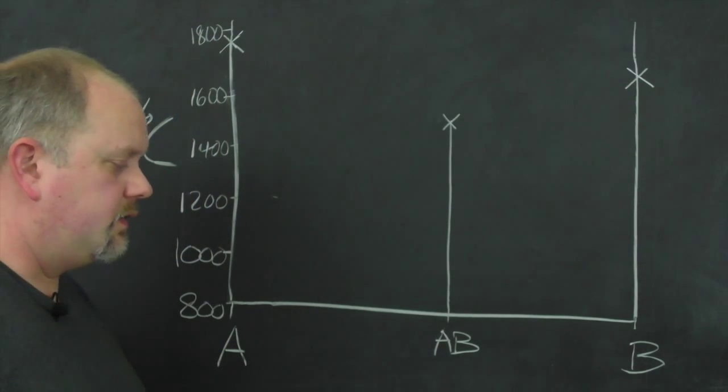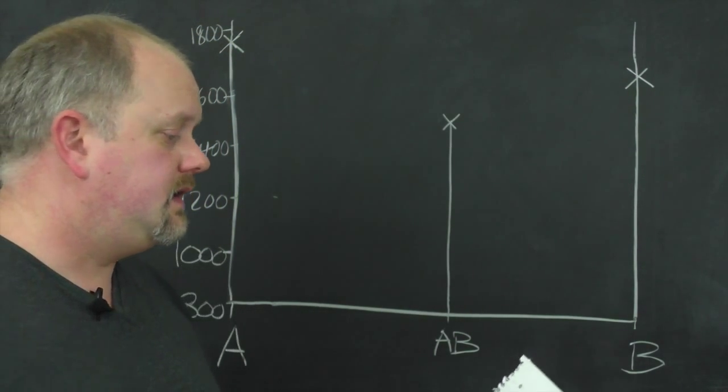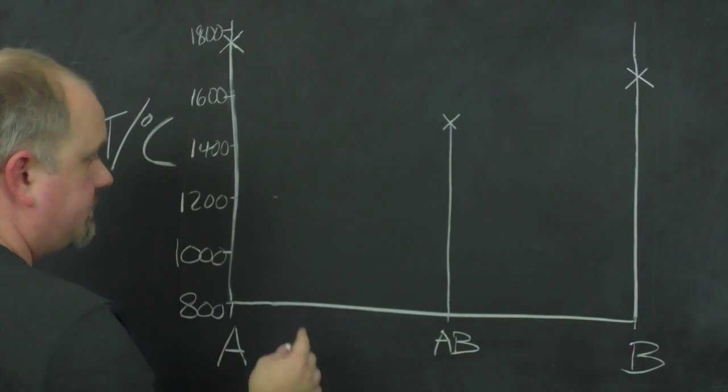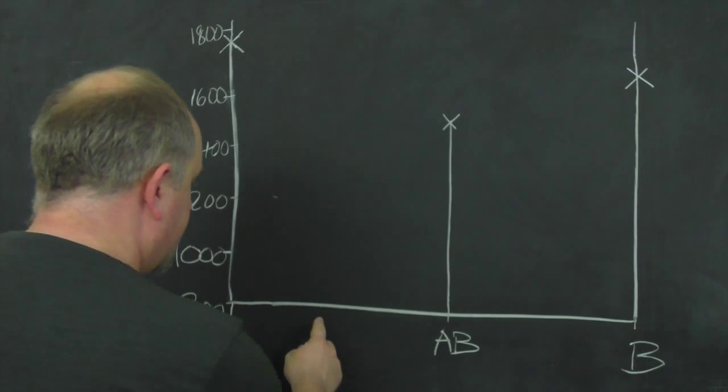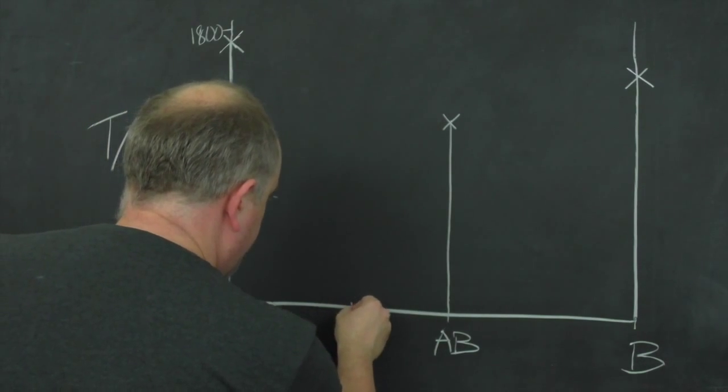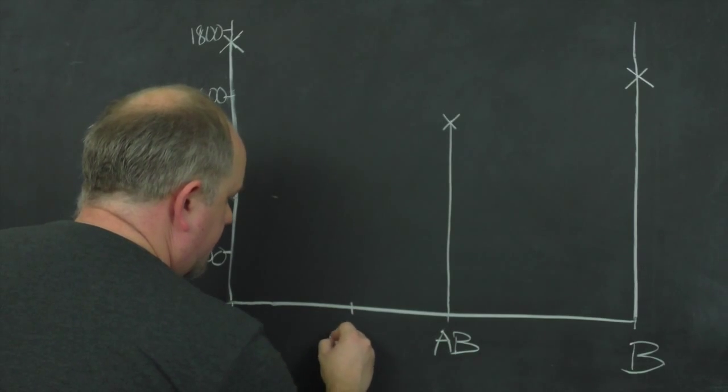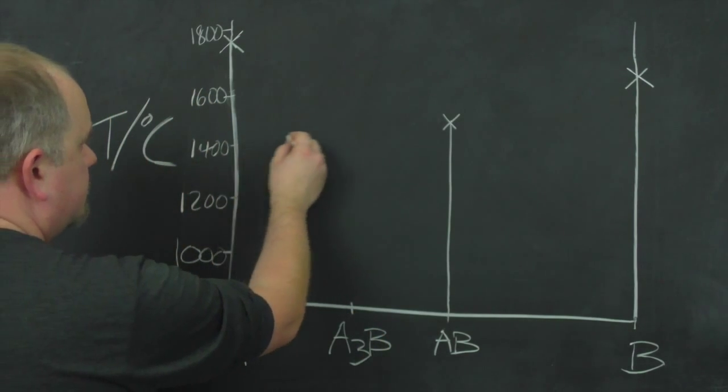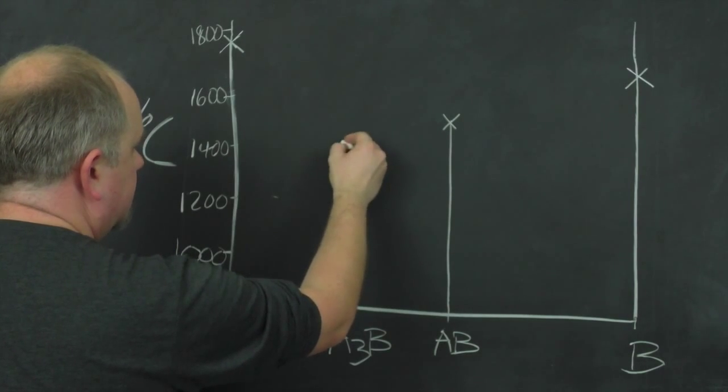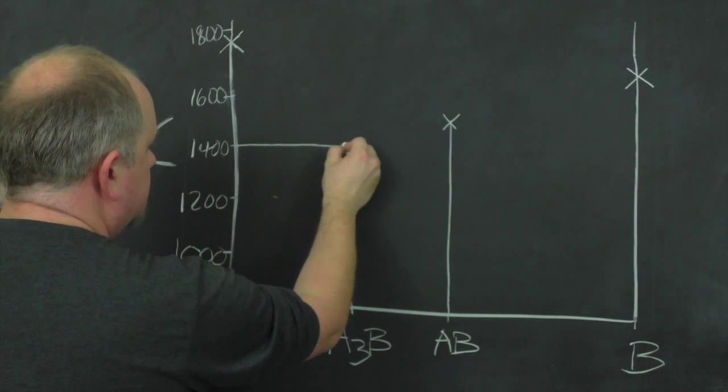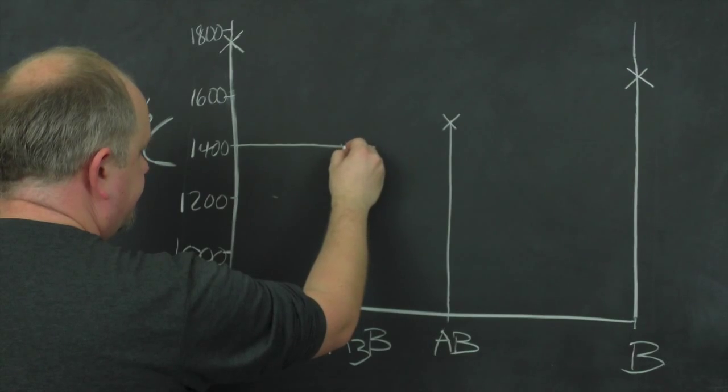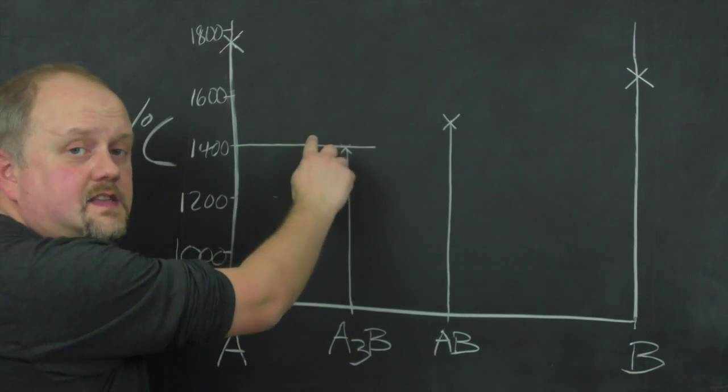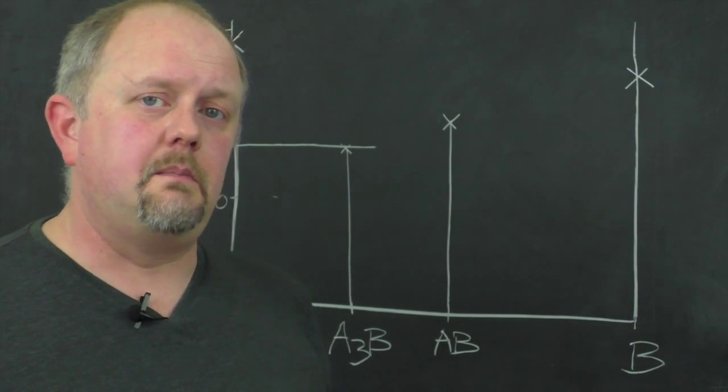We then know that we've got another phase, A3B, which melts incongruently at 1400. So A3B is 25% B, 75% A, so it should be about here. So A3B, and that melts incongruently at 1400. So we know it's going to look something like that. We've got this classic T shape from an incongruently melting phase.